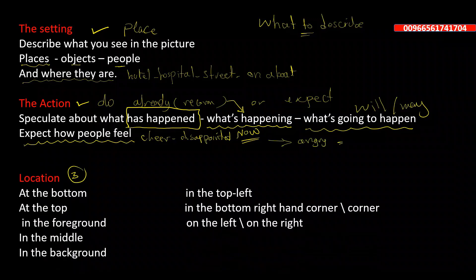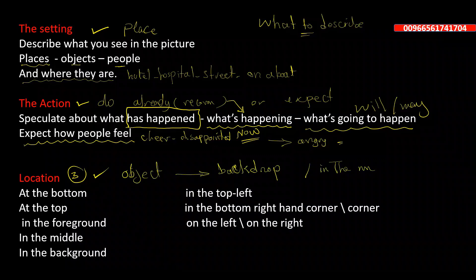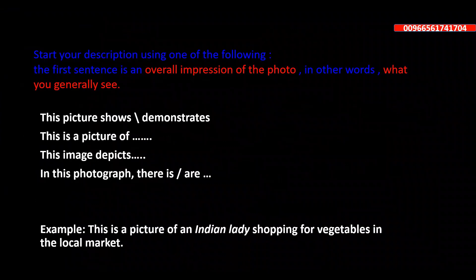One of the best ways to describe is to describe the locations of objects in the picture. As in the previous example, we described mountains in the 'backdrop' and the house 'in the middle.' Useful location phrases include: at the bottom, at the top, in the foreground, in the middle, in the background, on the left, on the right, and in the bottom right-hand corner.